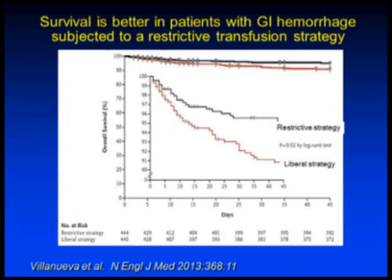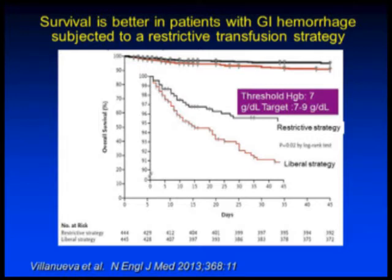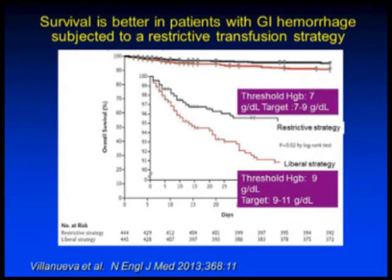There is a study in the New England Journal of Medicine that randomized every patient with GI hemorrhage, variceal or not, to two transfusion strategies. One was the restrictive transfusion strategy where you would start transfusing at a hemoglobin of 7 and maintaining it around 8, versus the liberal strategy where the patient would start being transfused at a hemoglobin of 9 with a target around 10. There was a clear difference in survival.